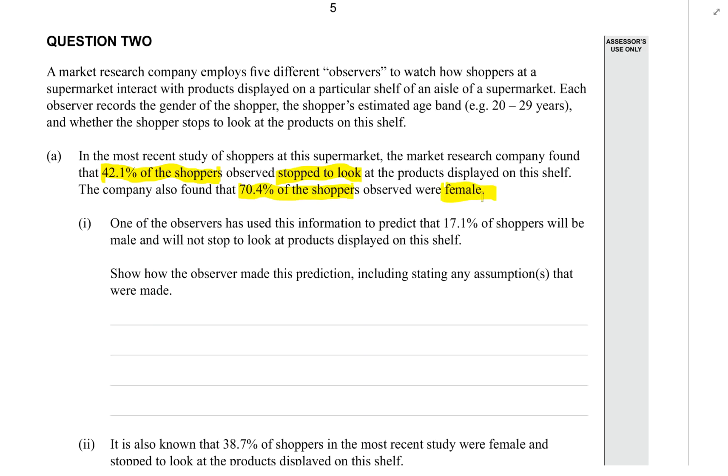One of the observers has used this information to predict that 17.1% of shoppers will be male and will not stop to look at products displayed on the shelf. Show how the observer made this prediction, including stating any assumptions that were made.